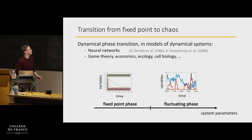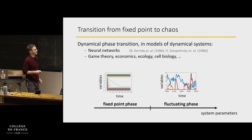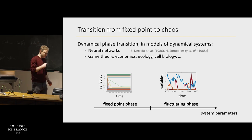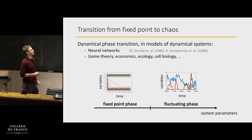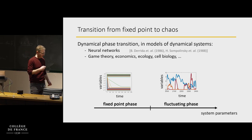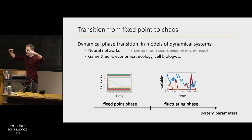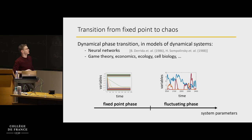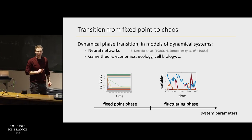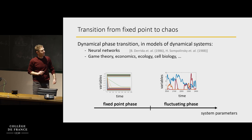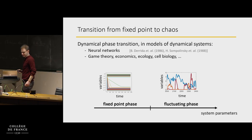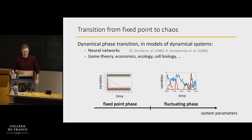The idea is simple. You have some dynamical system and you have the parameters of the system. As you change these parameters, there's a region of parameter space where the system's variables in time reach some fixed point — they no longer change. Then after some point, they start to fluctuate.